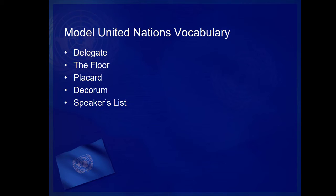The speakers list is the next concept. At the start of each phase of debate, the chairs will open the speakers list, which is the list of speakers in the order that they'll speak to the committee. At some conferences, the speakers list is kept electronically; at others, it's recorded on poster sheets at the front of the room by the chairs. In any case, it's important to get on the speakers list early, as at most conferences you'll not make it through the complete speakers list before moving on to the next phase of debate. And if you don't want to speak when your turn arrives, you can always move to the end of the list or yield your time to another delegate.